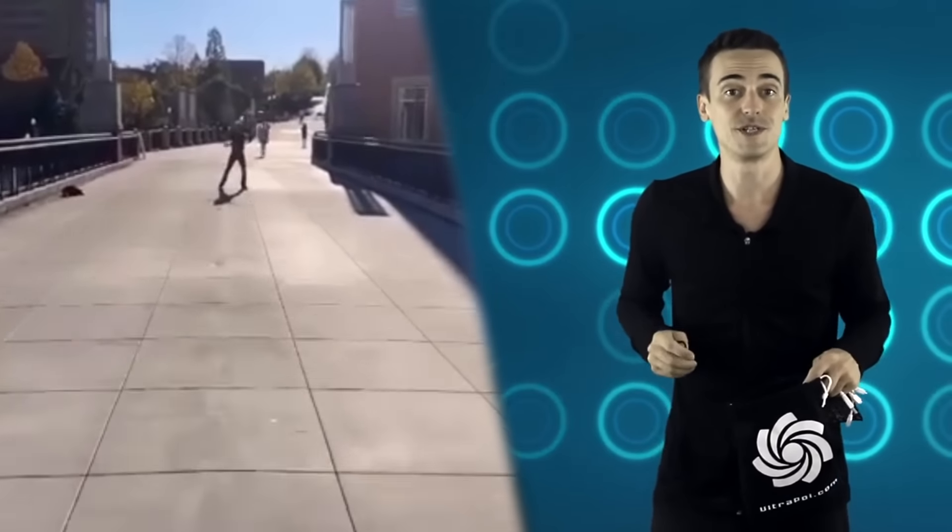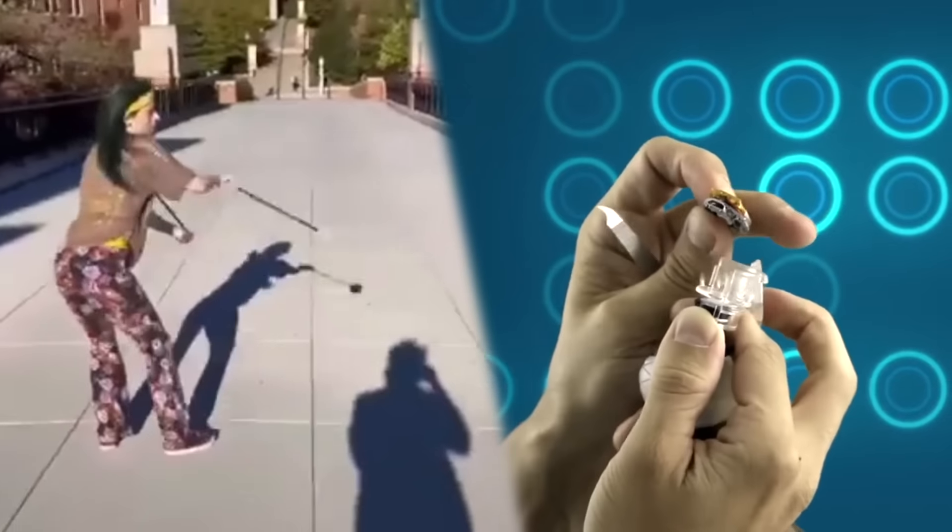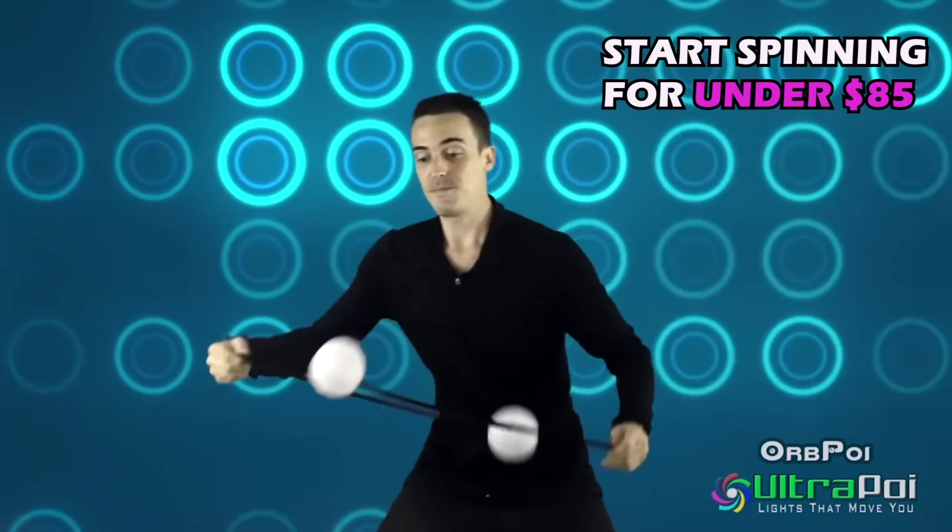These poi come in two different versions. There's Org Poi and the ones I'm holding here are Org Poi with Ultra Knob Pro. The difference is the Ultra Knob Pro version comes with LED chips inside the silicone handles for even better visibility. And that's pretty much it.